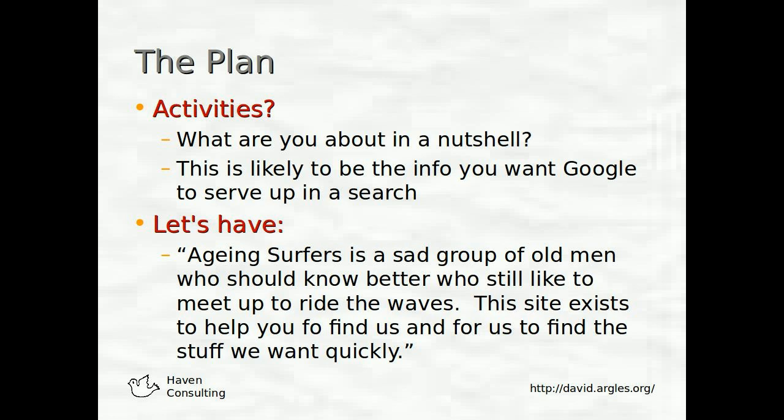Next in the plan is to think about the activities we engage in — what is this group about, in a nutshell? This is the kind of information you want Google to serve up in a search, so we want something really short and pithy, just a sentence or two. When folk arrive at the site, it's the first thing they see — it answers: who are we, and is this the place I wanted? Something like: 'AgeingSurfers is a sad group of old men who should know better, who still like to meet up to ride the waves. This website exists to help you find us, and for us to find the stuff we want quickly.'